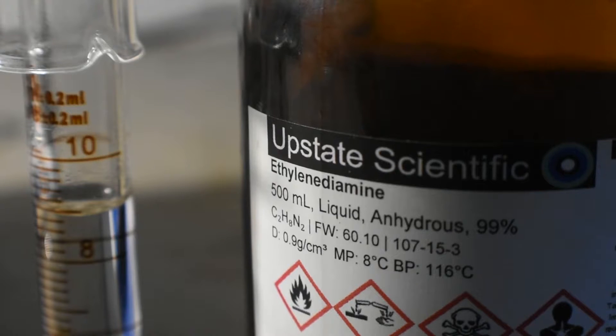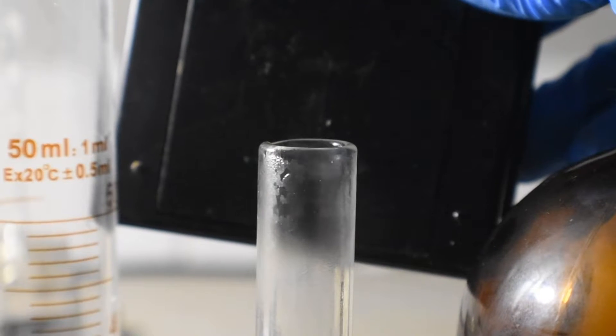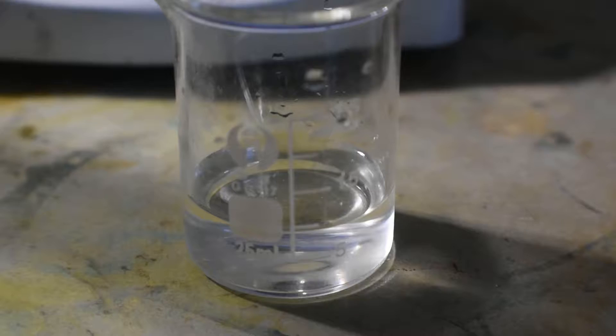The first reagent we'll need is anhydrous ethylenediamine. I've got 9 milliliters measured out, and I'm going to be adding this to 25 milliliters of pre-chilled, distilled water. Ethylenediamine tends to fume in air, so do keep this in mind.